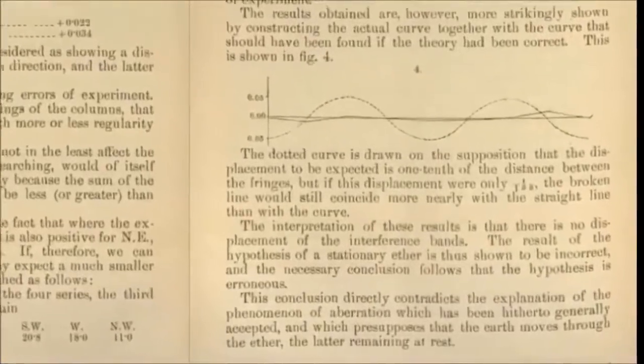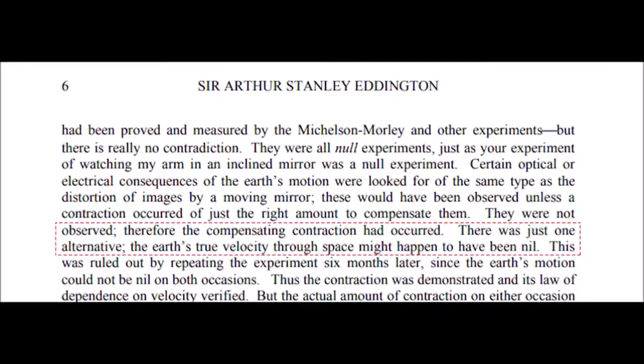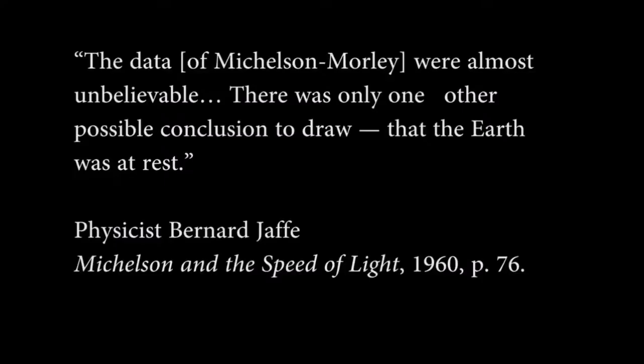Other prominent physicists have noted the same truth. There was just one alternative. The earth's true velocity through space might happen to have been nil. Physicist Arthur Eddington. The data of the Michelson-Morley test were almost unbelievable. There was only one other possible conclusion to draw. That the earth was at rest. Bernard Jaffe.